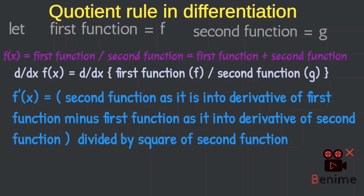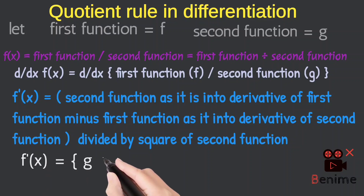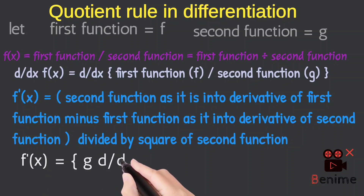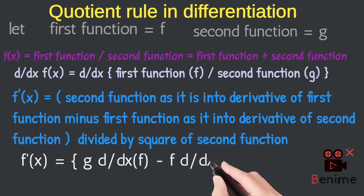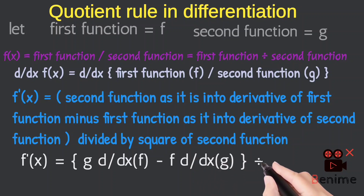Writing this in mathematical form: F dash of X is equal to G as it is, then the derivative of F with respect to X, then minus the first function F as it is, then the derivative of G with respect to X.